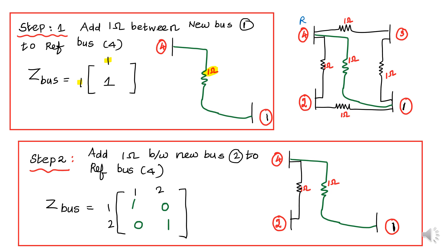What is step number 2? In step number 2, add 1 ohm between new bus 2 and reference bus 4. The Z-bus order is increased by 1, so the Z-bus now consists of a 2x2 matrix. Put row and column labels 1 and 2. Already we have Z(1,1). Now in this step we get Z(2,2) equal to 1. Z(1,2) — is there any connection between bus 2 and bus 1? No, so Z(1,2) = 0 and Z(2,1) = 0. This is step number 2.